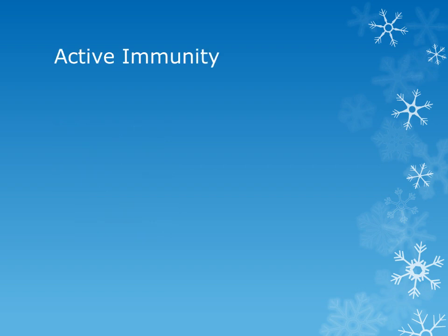Active immunity is the resistance that is induced when a person comes in contact with some specific disease. The infection may be in the form of clinical or subclinical infection, or it may be in the form of immunization with a live attenuated vaccine or killed vaccine. The immunity provided by this phenomenon is long-term but develops slowly and gradually. A very important example is the routine immunization given to infants against various infections.